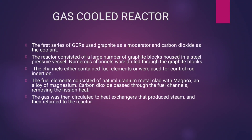The fuel elements consist of natural uranium metal, clad with Magnox, an alloy of magnesium. Carbon dioxide passed through the fuel channels, removing the fission heat. The gas was then circulated to heat exchangers that produced steam, and then returned to the reactor.